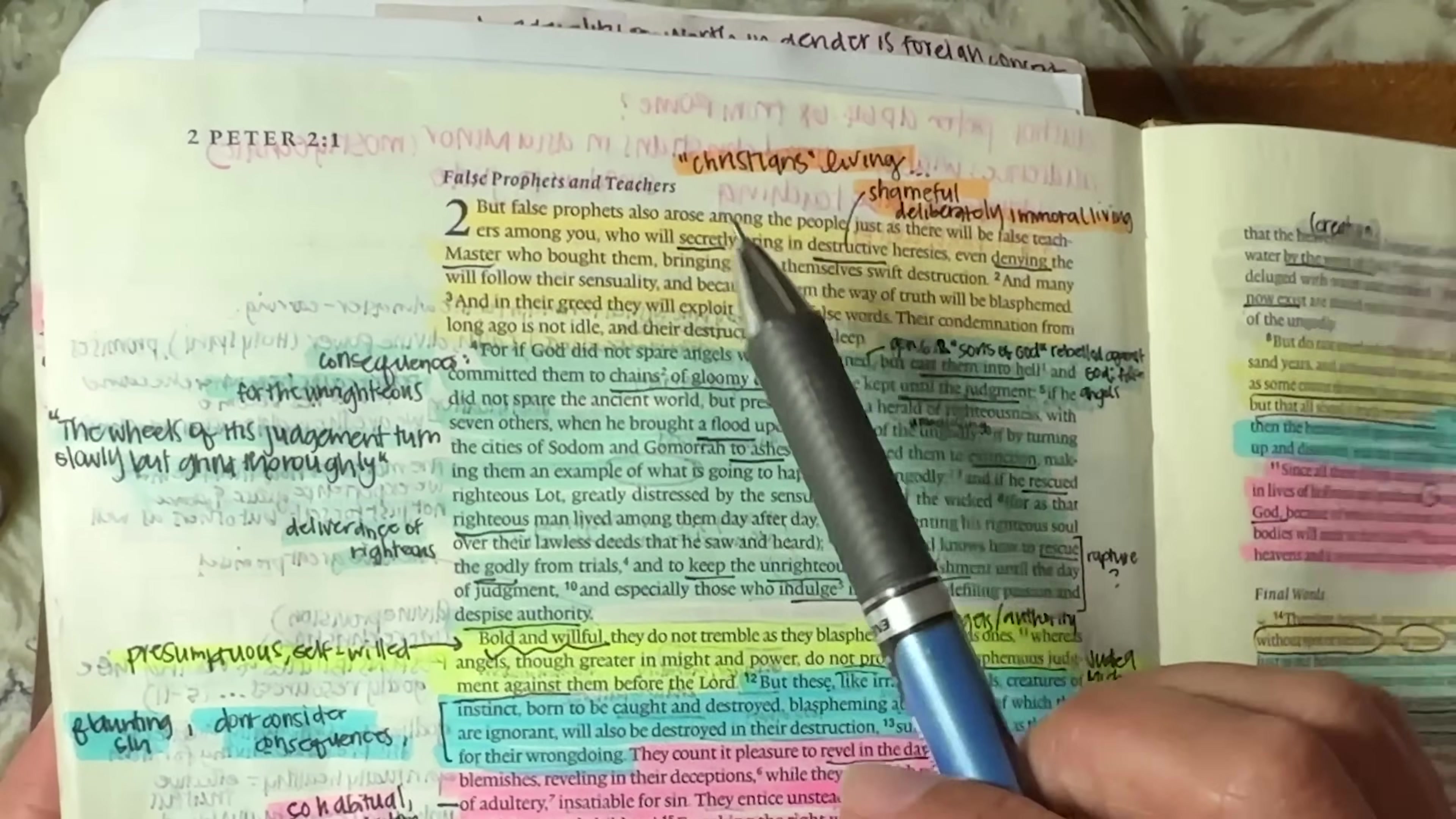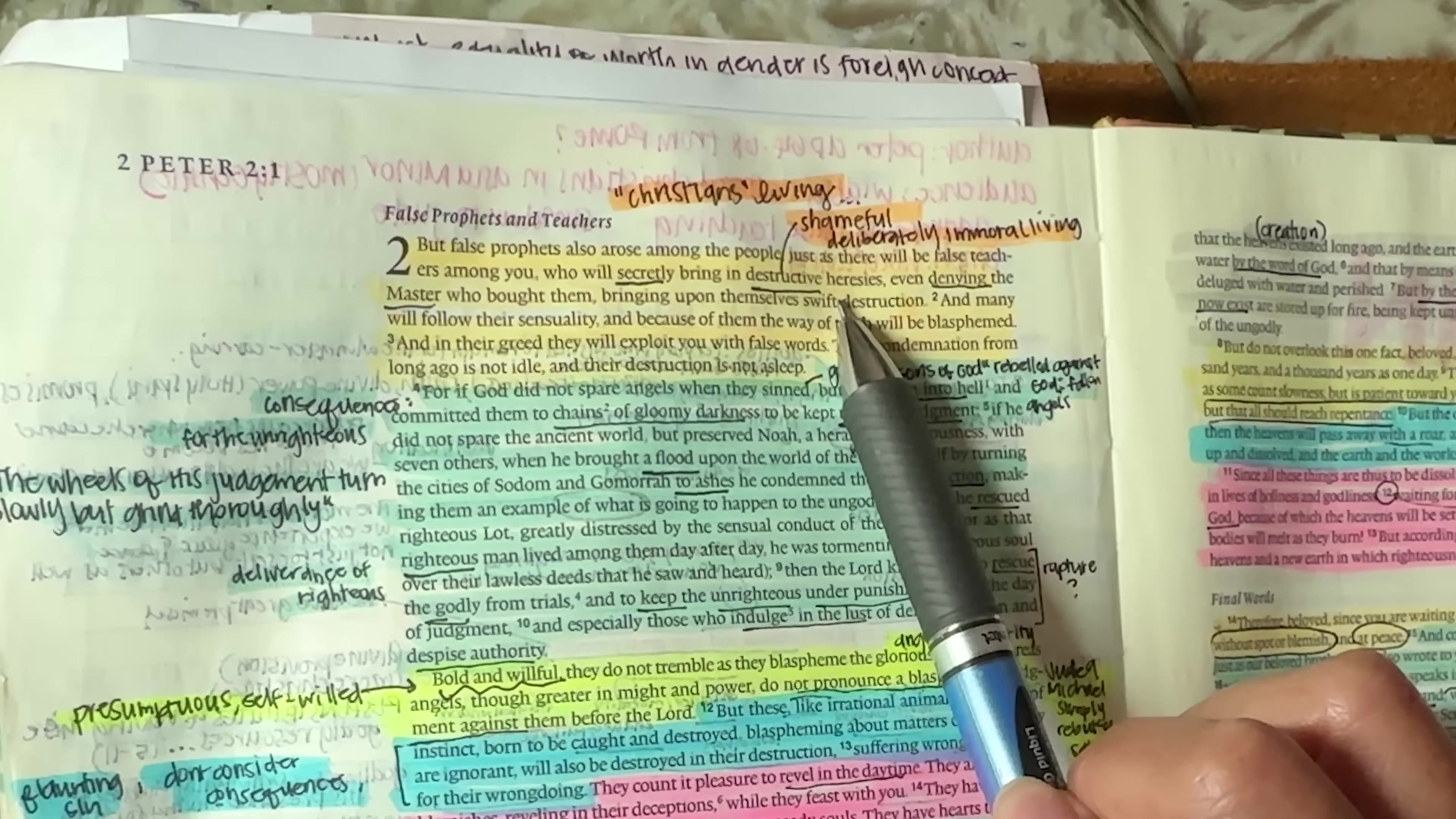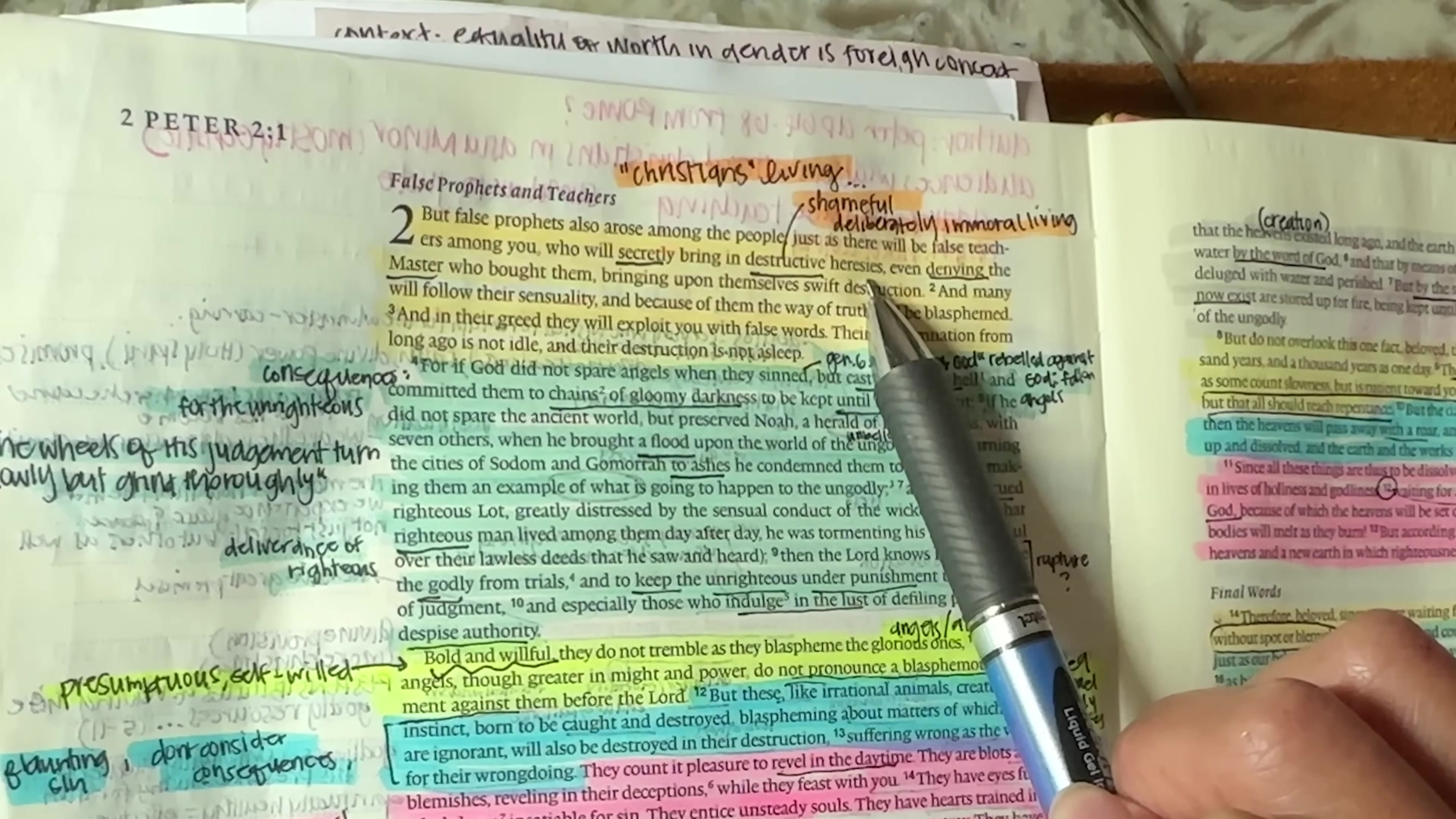So we'll continue here in chapter two about false prophets and teachers, but false prophets also arose among the people, just as there will be false teachers among you who will secretly. So they're not going to openly say, Hey, here's some false teaching for you today. Bring in destructive heresies, even denying the master who brought them bringing upon themselves swift destruction. So these are going to be Christians who are living shameful and deliberately immoral lives. But because people are going to be so deceived by it, they're not even going to recognize it.